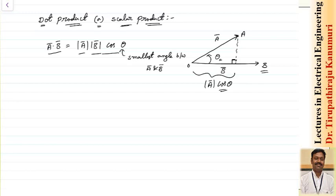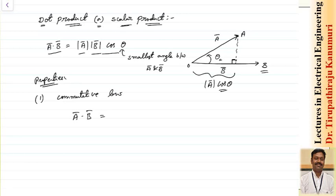Let us see what are the properties of the dot product, then we will see what are the applications and physical significance. The first property is it follows the commutative law. The commutative law means if you are taking a dot b, this will be equal to b dot a.